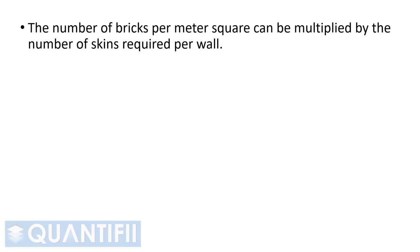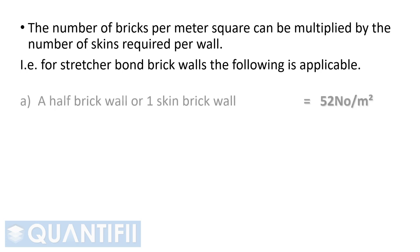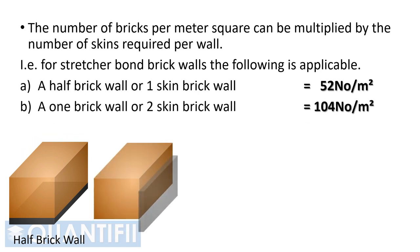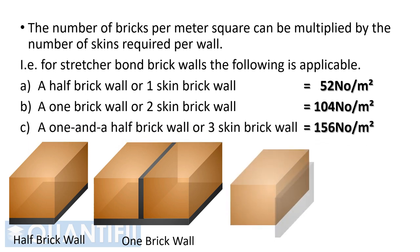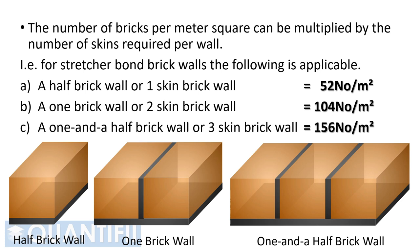The number of bricks per square meter can then be multiplied by the number of skins required per wall. For stretcher bond brick walls: a half brick wall (single skin) is 52 bricks per square meter; a one brick wall (two skins) is 104 bricks per square meter; and a one and a half brick wall (three skins) is 156 bricks per square meter. Walls wider than three skins can be multiplied by the number of skins required, and can also be measured in cubic meters.